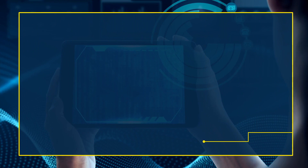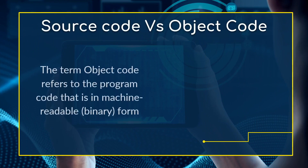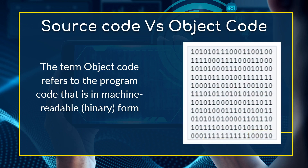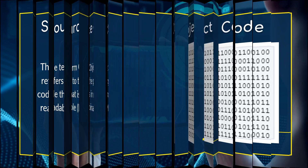The next term is object code. Object code simply refers to a program code that is in machine-readable form. Source codes are understood by the programmer because they are in the language they understand, while object codes are in binary and therefore are understood by the computer. The programmer writes source code in readable statements, but for the program to work it has to be translated into object code.